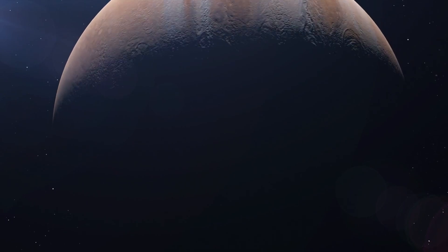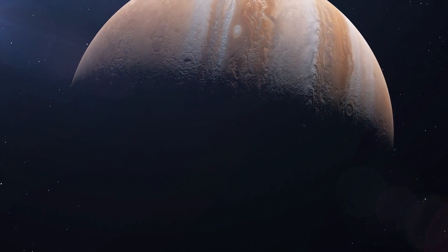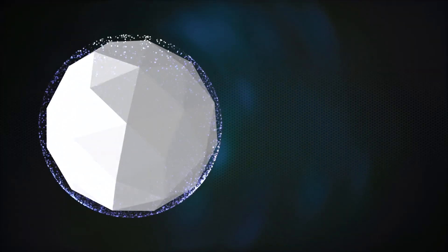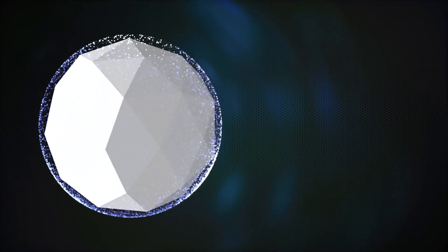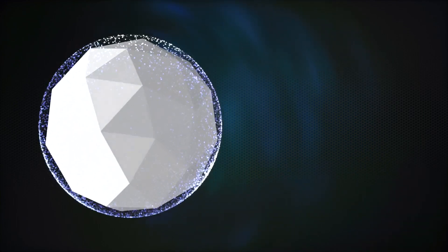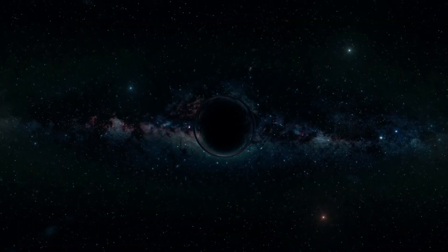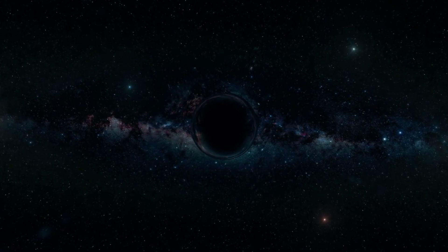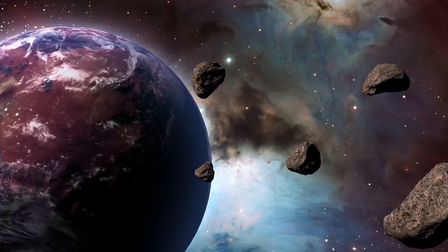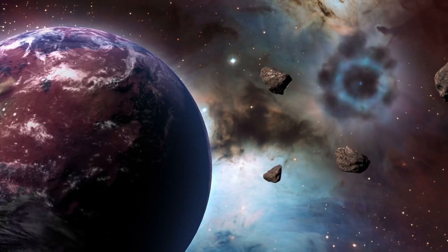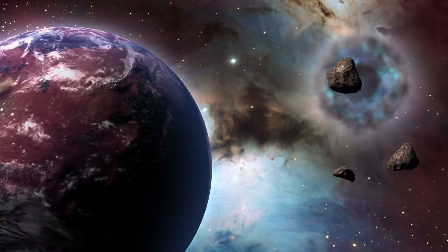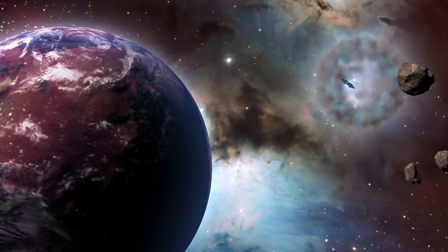Over the years, scientists have noticed peculiar fluctuations and distortions in the vicinity of Jupiter. These anomalies include unexplained gravitational anomalies and fluctuations in the planet's magnetic field. One hypothesis is that these anomalies could be the result of a nearby wormhole. The immense gravitational forces associated with the wormhole's presence could explain the irregularities observed around Jupiter.